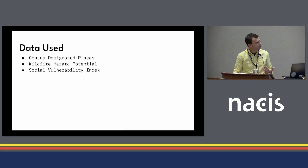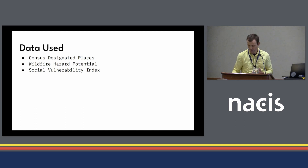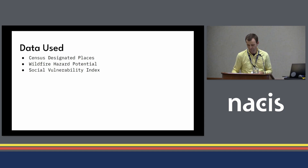I used three data sets to map and answer some of the questions. They were census-designated places, which are basically polygons of unincorporated areas throughout the contiguous United States; wildfire hazard potential, which is a 270-meter small-scale raster; and finally, a social vulnerability index, which is polygons at the census tract level.